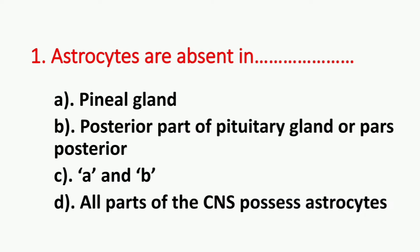Question number 1. Astrocytes are absent in? Option A: Pineal gland. Option B: Posterior part of the pituitary gland, or pars posterior. Option C: A and B. Option D: All parts of the CNS possess astrocytes. The answer is Option C, A and B.